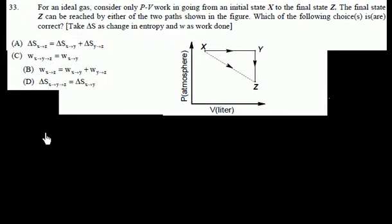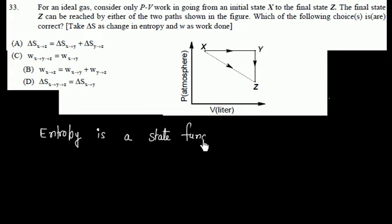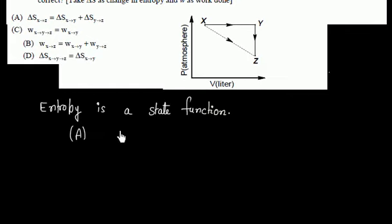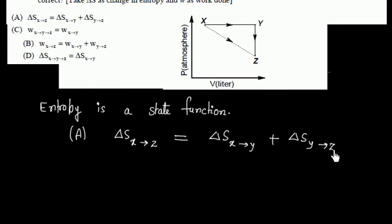We will use the fact that entropy is a state function. So considering option A: the entropy change from X to Z is the same as entropy change from X to Y plus Y to Z. That is true, basically because entropy change is independent of path — I can go from X to Z directly, or I can go from X to Y and then Y to Z. So option A is correct.